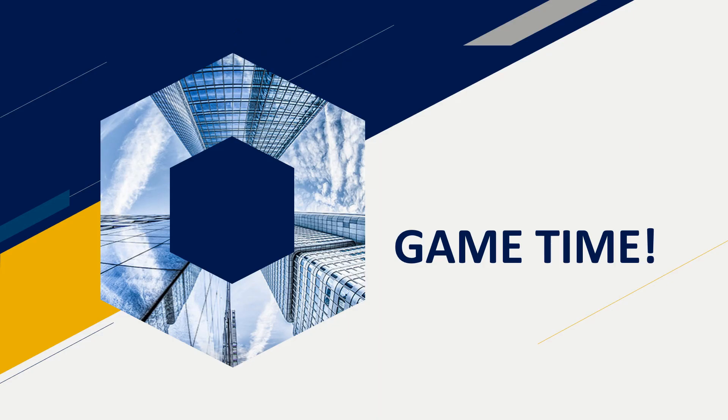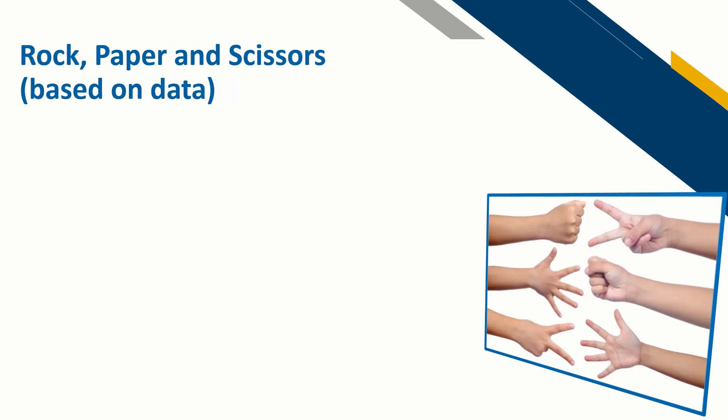It's now game time. Let us learn how to play a few games based on these domains and understand them better. The first game we will be playing is Rock, Paper, and Scissors. This is a very old and simple game which shows the power of artificial intelligence and machine learning to learn, adapt, and respond.